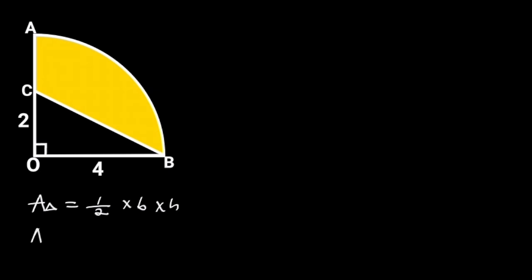So, the area of triangle OBC will be 1 over 2, times OB, times OC. OB is equal to 4. OC is equal to 2. Substituting these values in this formula will give us 1 over 2, times 4, times 2.